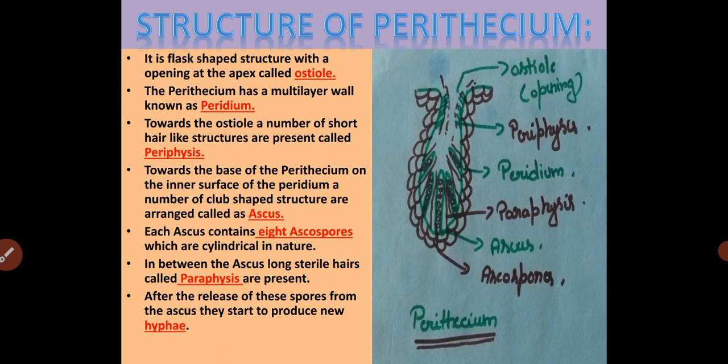The perithesium is the fruiting body of Xylaria, which is a flask-shaped structure with an opening at the tip called the ostiole. It has a multi-layered outer covering called the peridium. Inner to the peridium at the basal region, it produces sac-like structures called asci, each comprising 8 ascospores. The asci are separated by sterile hair-like structures at the base called paraphyses. When the ascus attains maturity, it bursts and releases the spores outside; these spores, when they find a suitable environment, germinate and produce new hyphae.